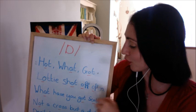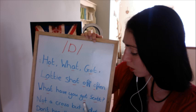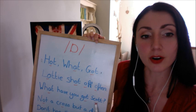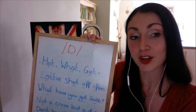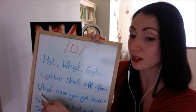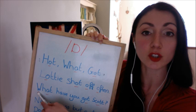So: 'Lottie shot off often.' Then we have the next sentence: 'What have you got, Scott?' I'm asking Scott what he possesses. Make sure we have a nice rounded W — we covered this sound the other day. 'What have you got, Scott?'